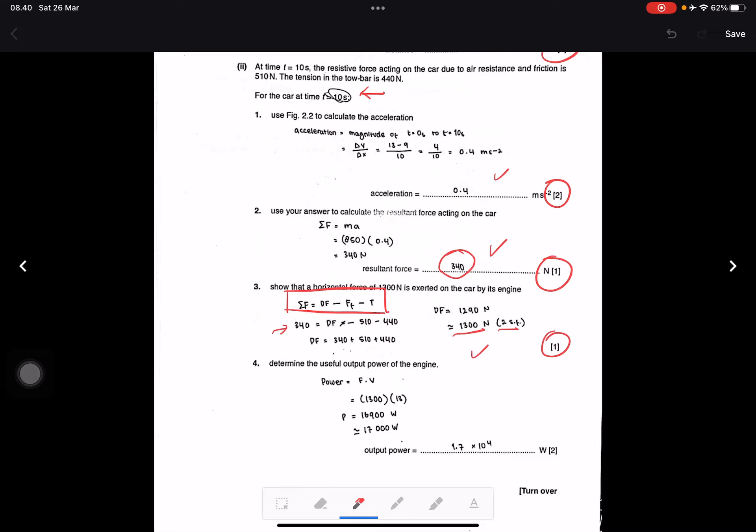Question iii: Determine the useful output power of the engine. Power equals force times velocity. P equals 1300 times 13, which equals 16900, or in significant figures 1.7 times 10 to the power 4 watts. It's correct also.